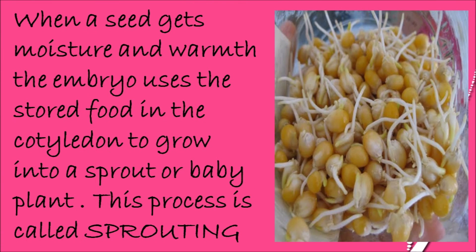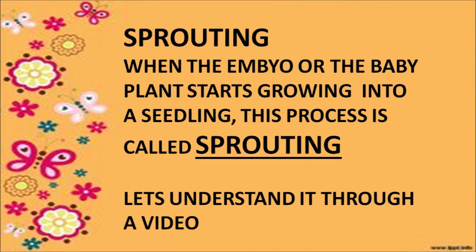Have a closer look at the picture — are you able to see the thread-like structures? These thread-like structures are the embryo growing into the baby plant. When a seed gets moisture and warmth, the embryo uses the stored food in the cotyledon to grow into a sprout or a baby plant. This process is called sprouting. When the embryo or the baby plant starts growing into a seedling, this process is called sprouting.